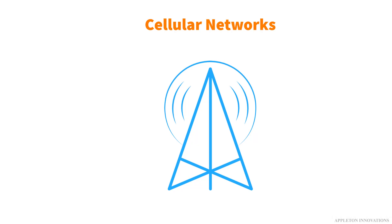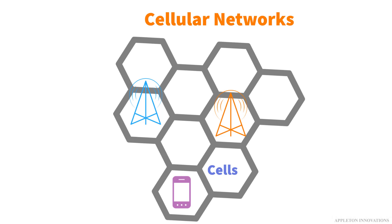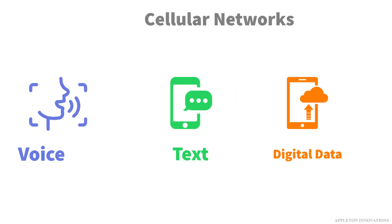Welcome to the lesson on cellular networks. The most familiar kind of network connection that can be used by IoT devices is a cellular network — our mobile phones use cellular networks. Today we may be using 2G, 3G, or 4G, and all of these are cellular networks. Cellular technology is a long-distance network, pretty different from short-range technologies such as Wi-Fi or Bluetooth. It uses a global network of transmitters and receivers to carry voice, text, and digital data.